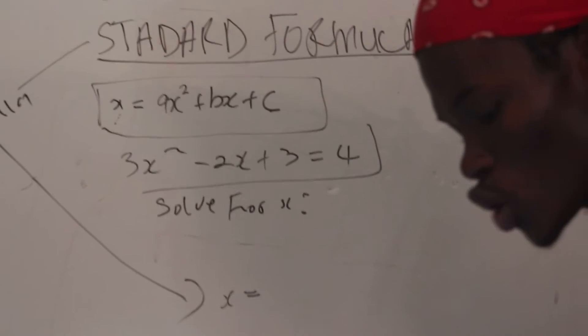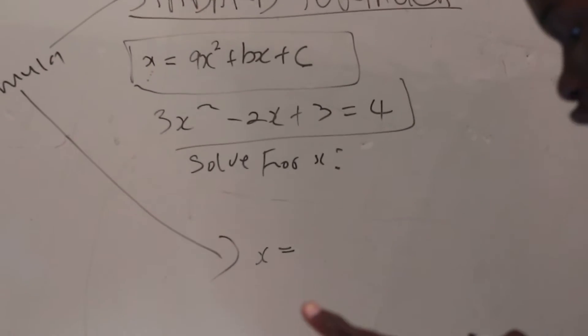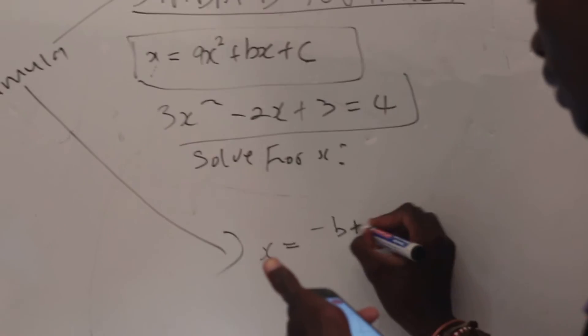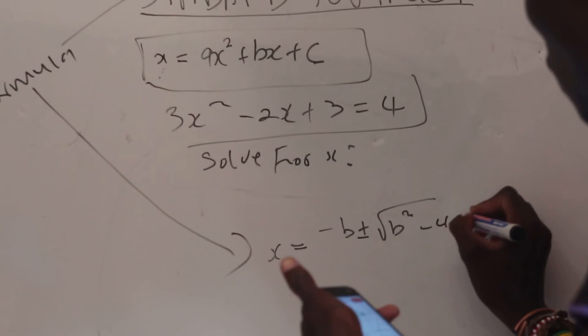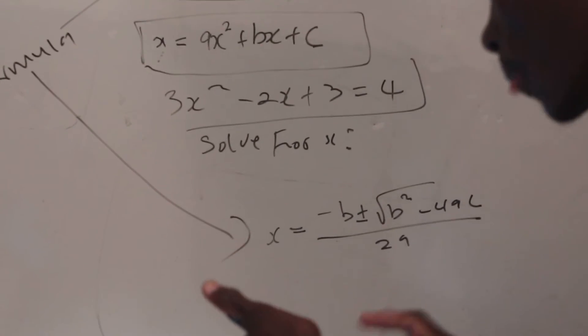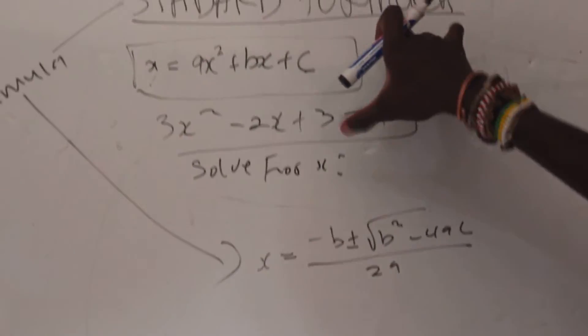It's x = -b ± √(b² - 4ac) / 2a. So what's happening here? This is the baby of the standard formula. This is going to help you understand the standard formula even better.